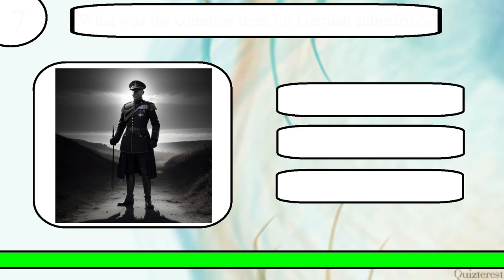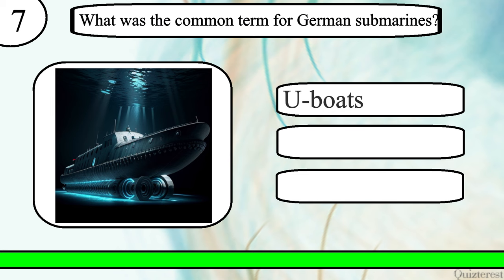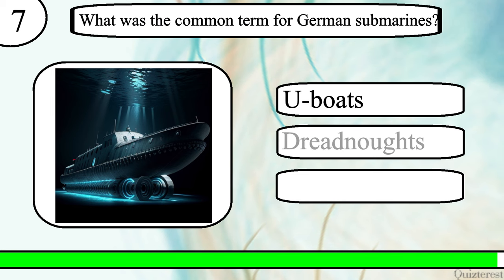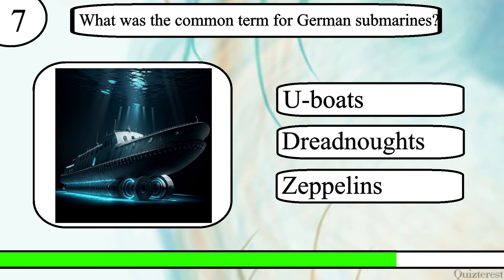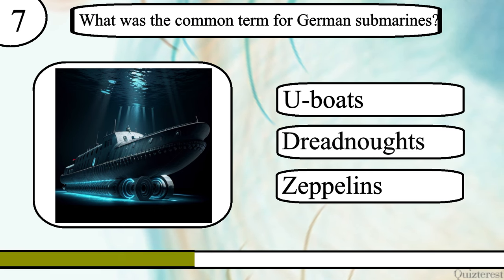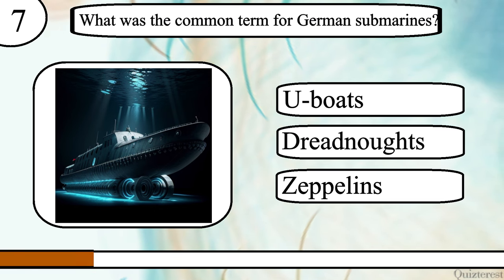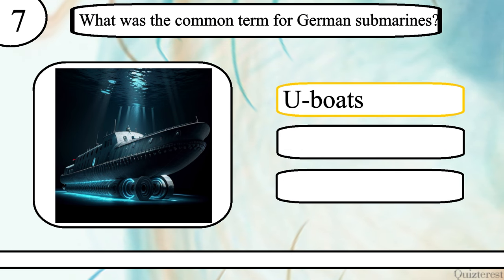Question 7. What was the common term for German submarines? U-boats, dreadnoughts or zeppelins? The correct answer is U-boats.